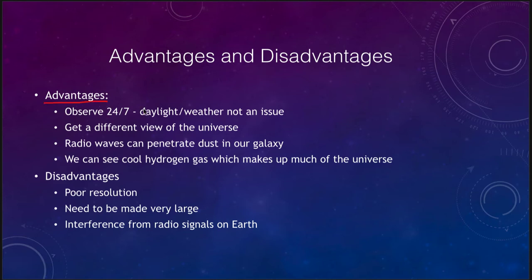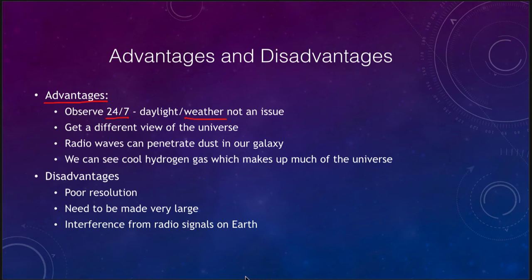One of the advantages is that you can observe 24/7. Radio waves are not affected by daylight and not much affected by weather, so you can actually observe during the day. You cannot point close to the sun because the sun is a radio source as well, but as long as you're not looking in the general direction of the sun, you can still observe even during the day. Weather is not much of an issue either — if it's raining or snowing, you can still observe with a radio telescope. If you have a thunderstorm with electrical discharges in the atmosphere, you would not be able to get accurate observations due to interference from those discharges.